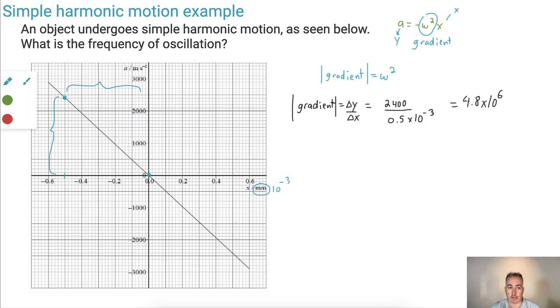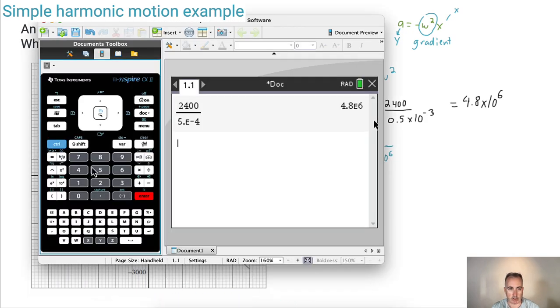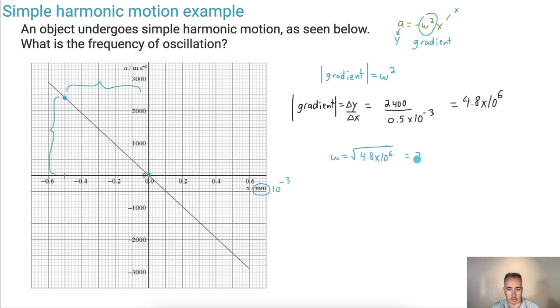Because I want to find omega now, and I can, because omega equals the square root of the gradient. So it's the square root of 4.8 × 10⁶. Let me calculate that. I'll take the square root of the answer. I end up with 2190.89, and this is in radians per second. Now why is that helpful?